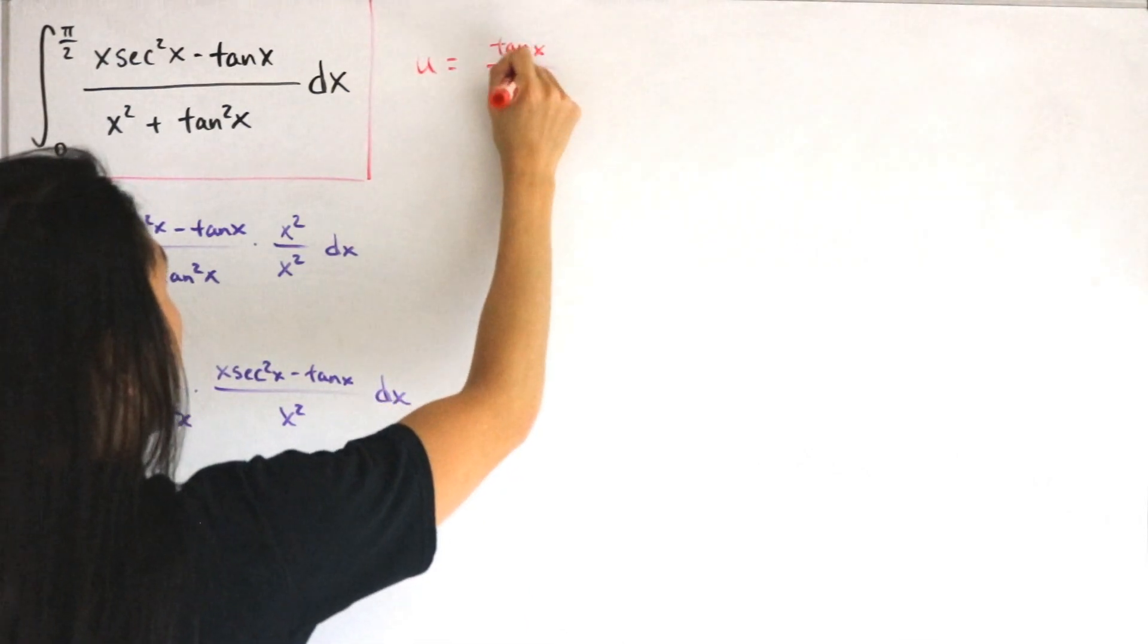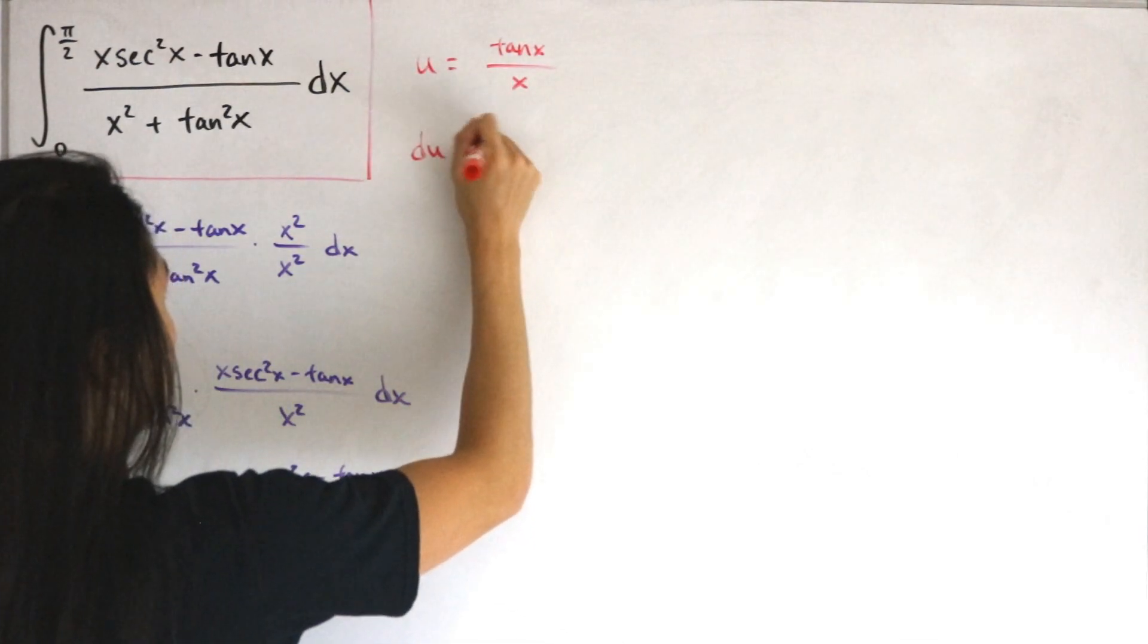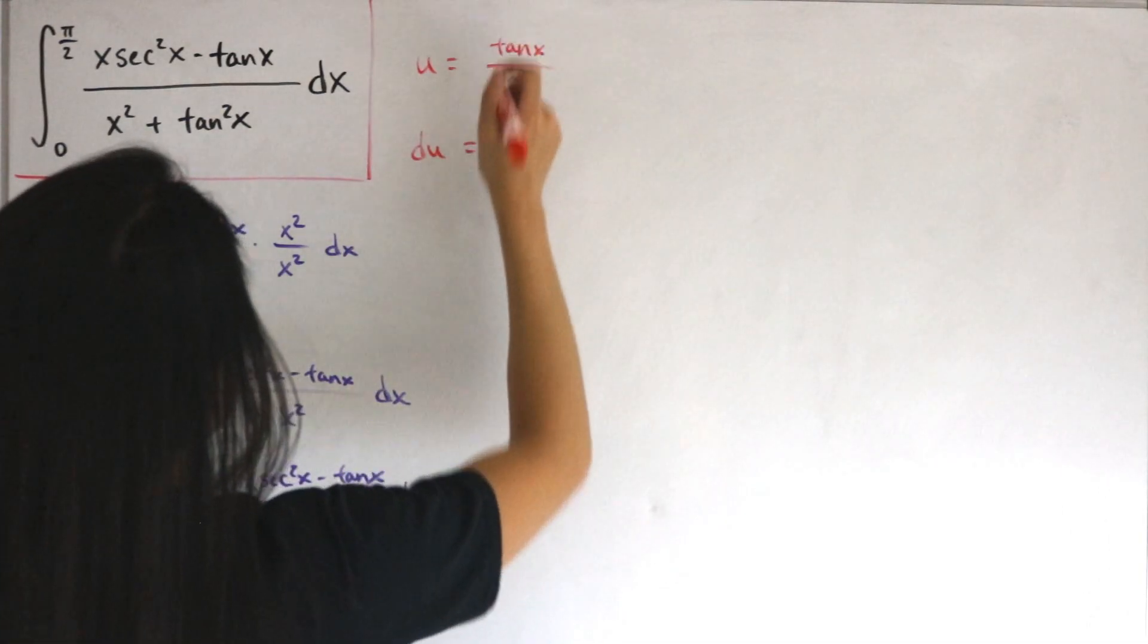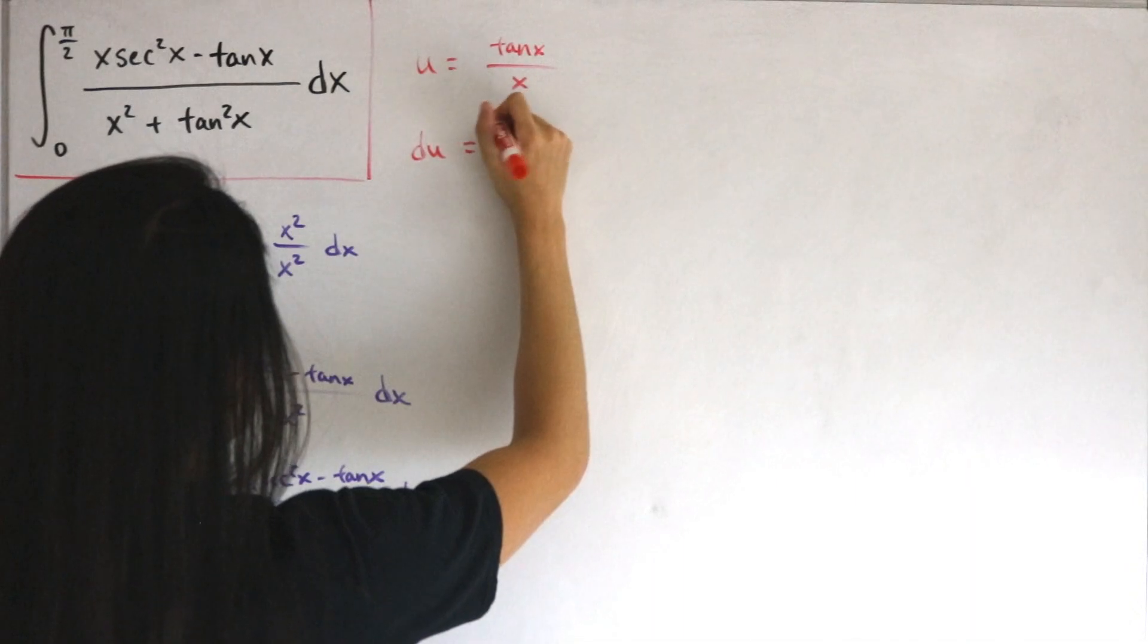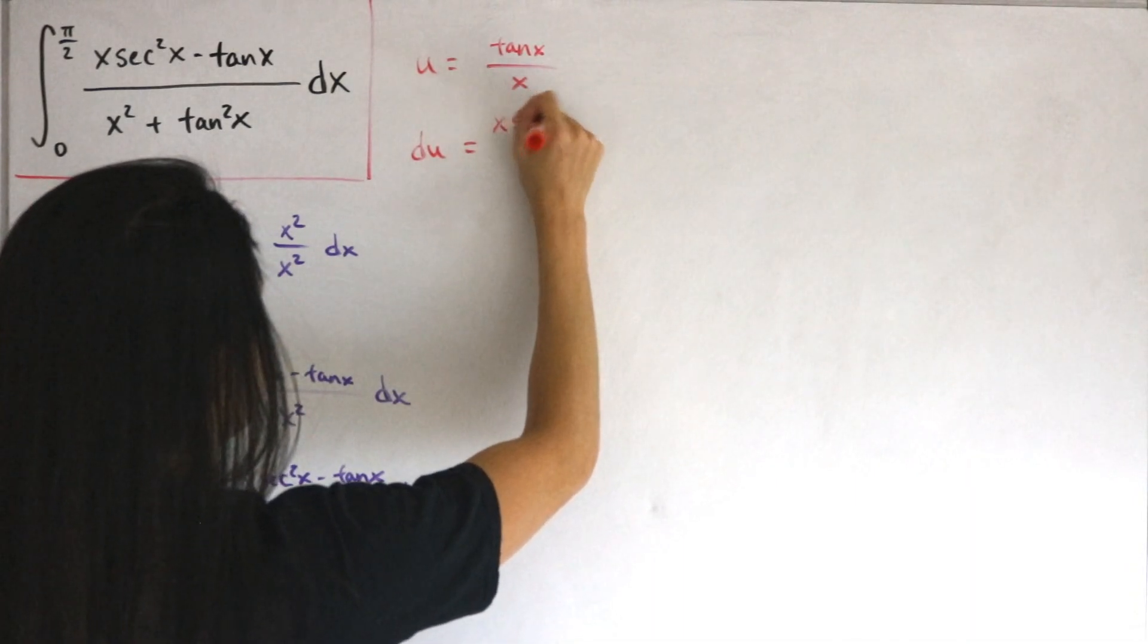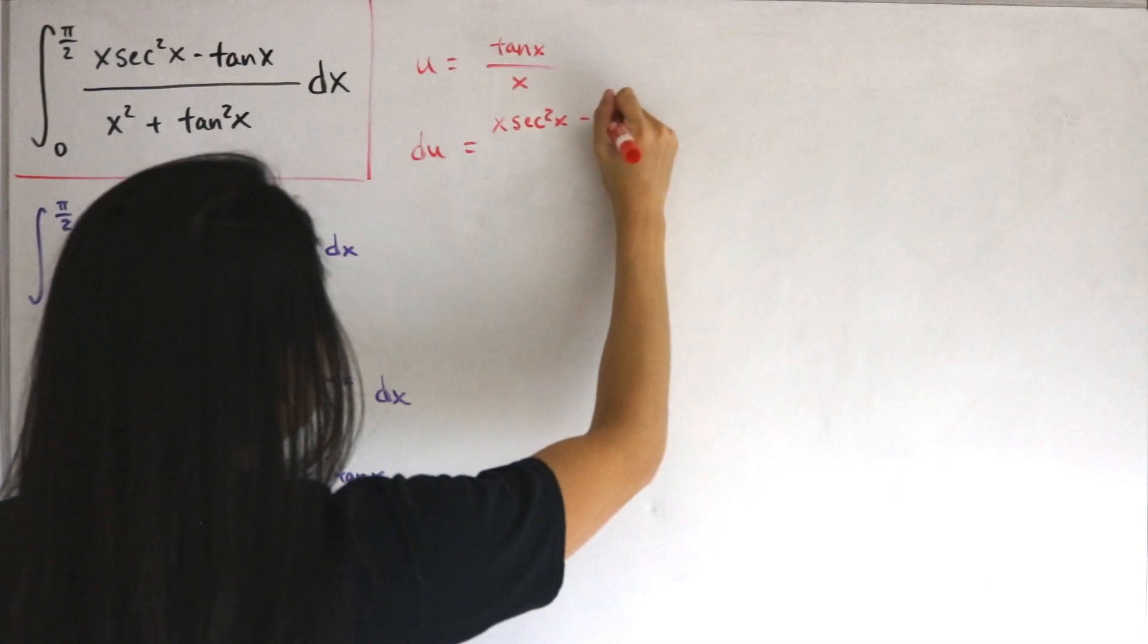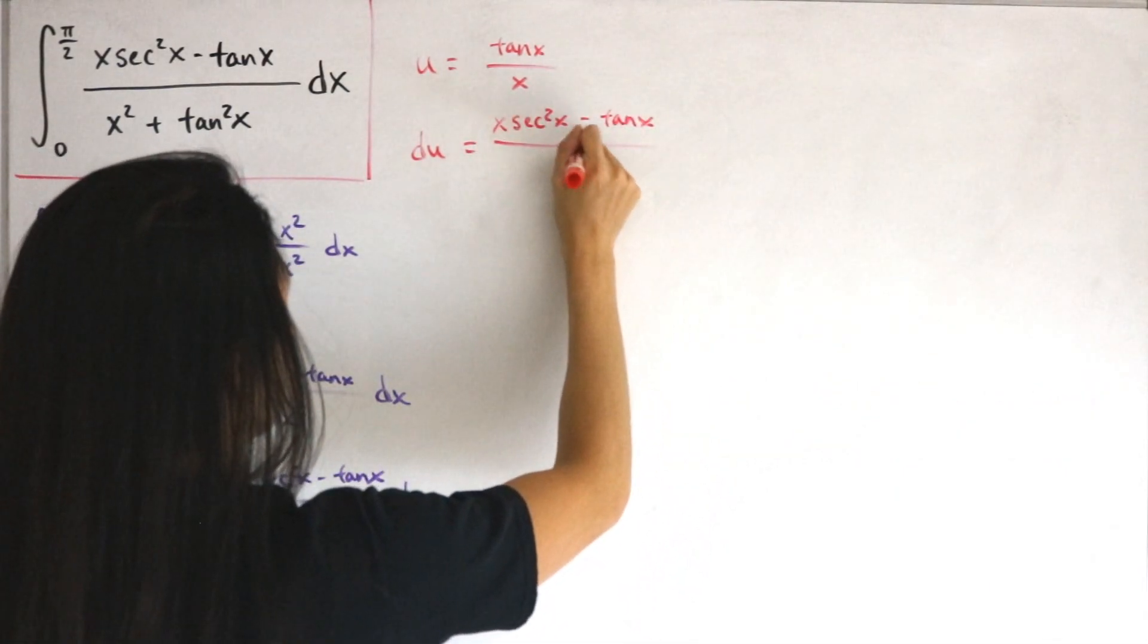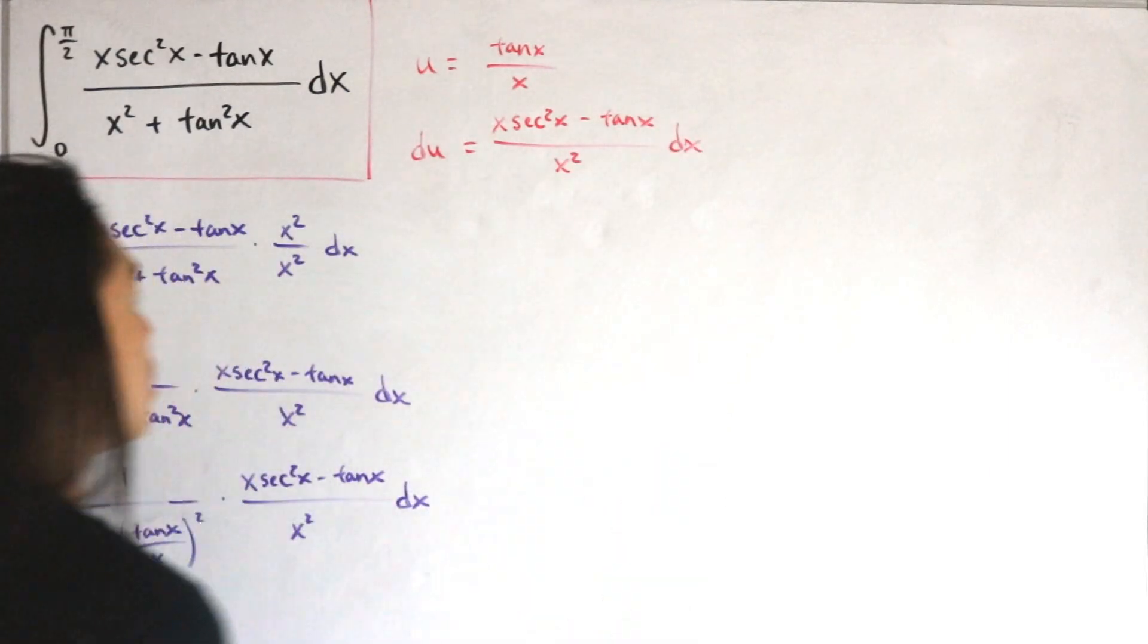So then du equals—we just apply the quotient rule. On the numerator, we'll have x·sec²x - tan x, divide this by x², followed by dx.